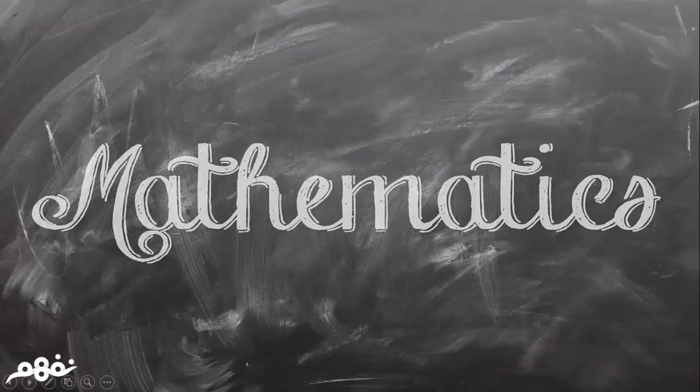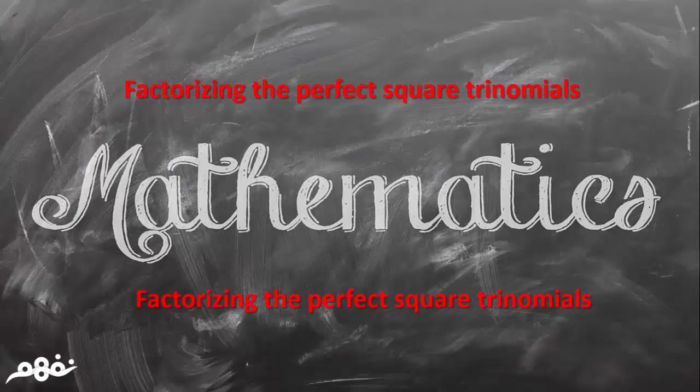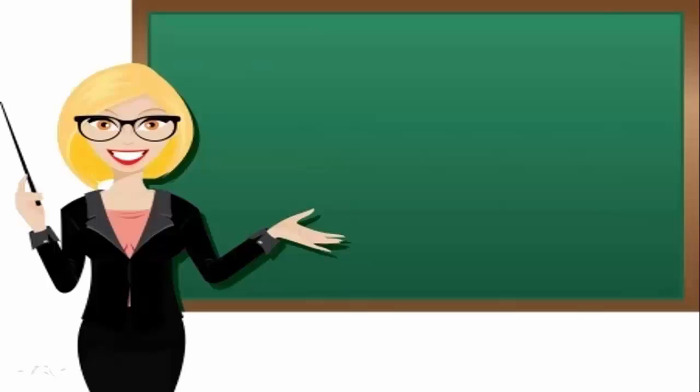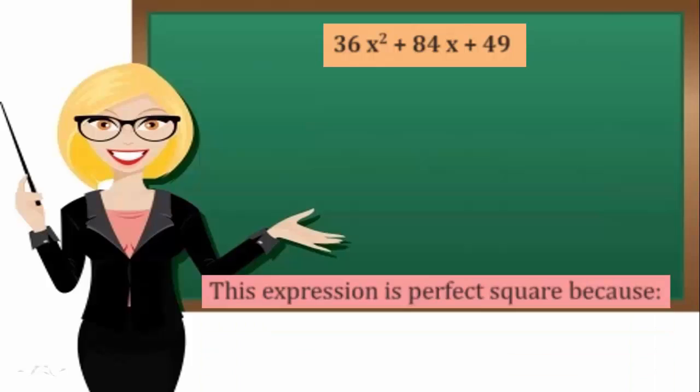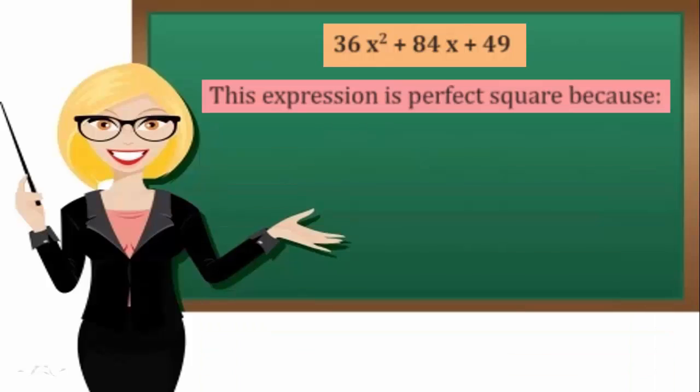Factorizing Perfect Square Trinomials. Example: 36x squared plus 84x plus 49. This expression is a perfect square trinomial because of the following three conditions.